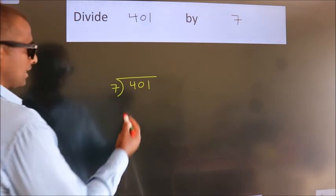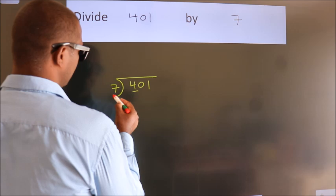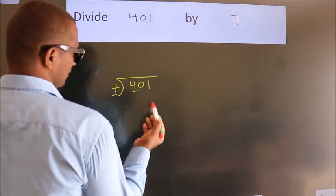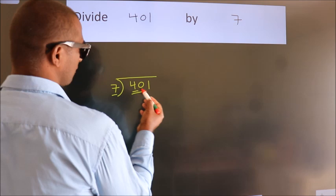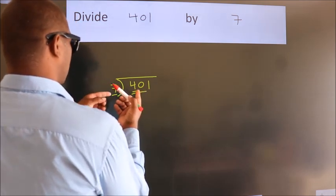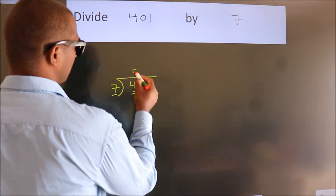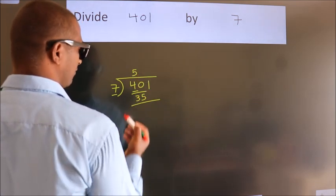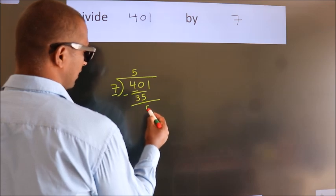Next, here we have 4, here 7. 4 smaller than 7, so we should take 2 numbers, 40. A number close to 40 in 7 table is 7 fives, 35. Now, we should subtract, we get 5.